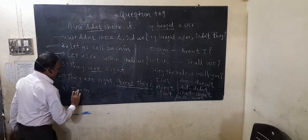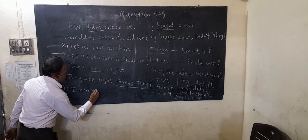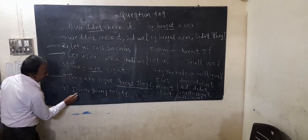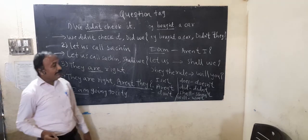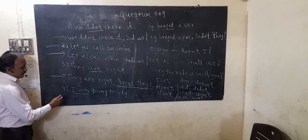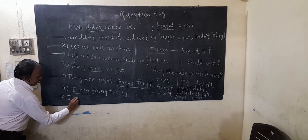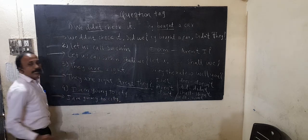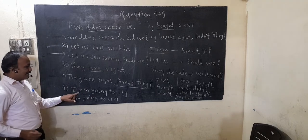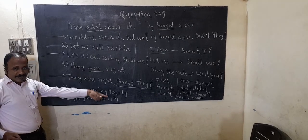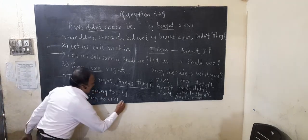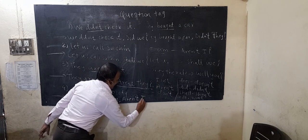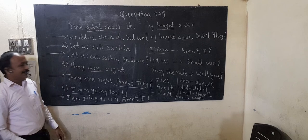Another example: 'I am going to the city.' Whenever 'I am' appears, the question tag becomes 'aren't I'. Since the statement is positive, the question tag comes negative: 'I am going to the city, aren't I?'